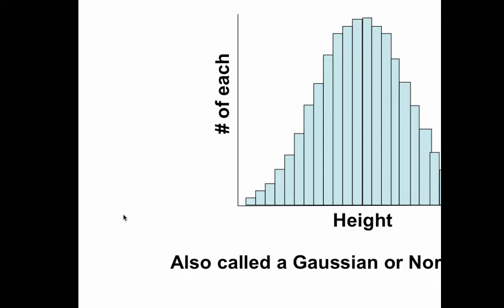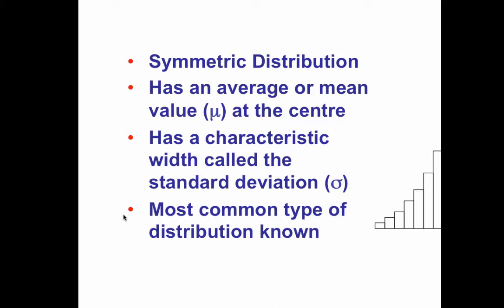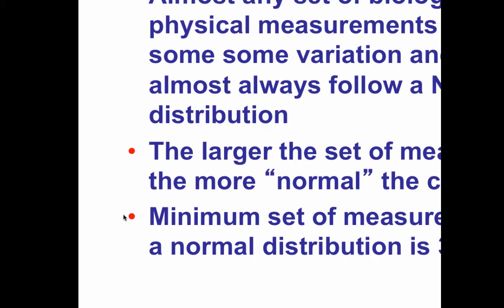Carl Friedrich Gauss noticed this, so the shape itself is called a Gaussian curve or a normal distribution. The normal distribution of single variables is symmetric. It has an average or mean, given the Greek letter mu, at the center. The width of that distribution is called the standard deviation. Almost everything we measure in nature will follow this — there are exceptions, but it's a very common distribution.